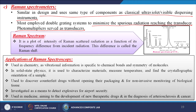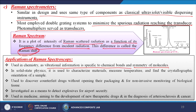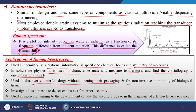The Raman spectrum is a plot of intensity of Raman scattered radiation as a function of its frequency difference from incident radiation — this difference is called the Raman shift. Applications include chemistry for vibrational information specific to chemical bonds, solid state physics for material characterization and temperature measurement, detection of counterfeit drugs without opening packaging, non-invasive monitoring of biological tissues, detecting explosives for airport security, and development of therapeutic drugs and diagnosis of arteriosclerosis and cancer.